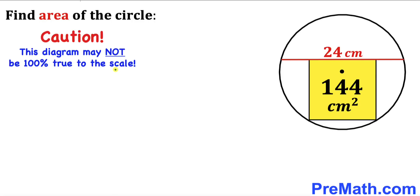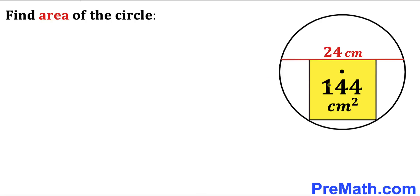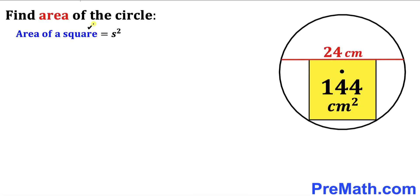Please keep in mind that this figure may not be 100% true to the scale. Let's get started. Let's focus on this yellow square whose area has been given to us as 144 centimeter square, and now let's recall the area of square formula: area equals s squared, where s represents the side length of the square. So the side length can be found by setting 144 equal to s squared.